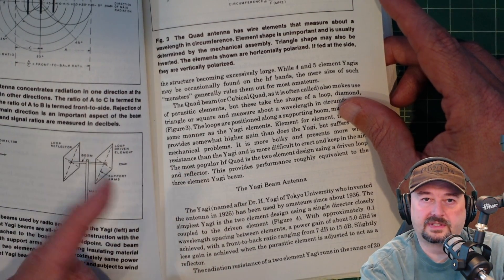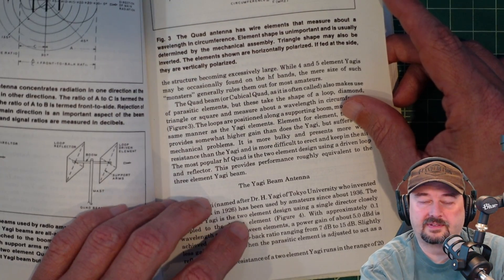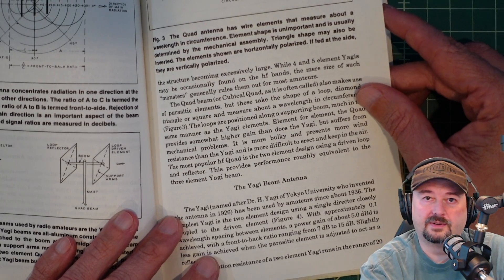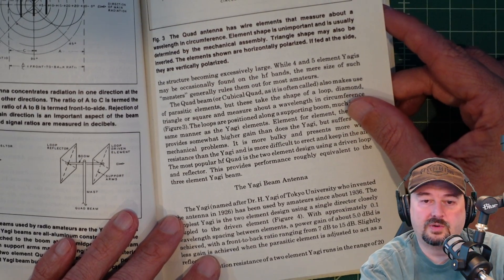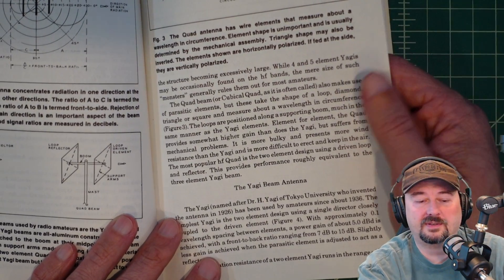One thing that I find funny is 40 years ago, it was still okay to refer to the Yagi as the Yagi, named after Dr. H. Yagi. Now, everybody wants to show how smart they are by calling it the Yagi-Uda, because Uda was the guy who worked for Yagi. And apparently, he was a key contributor who doesn't get enough credit.